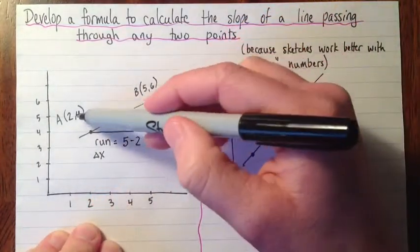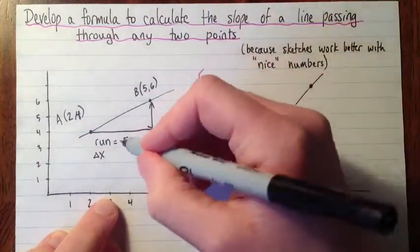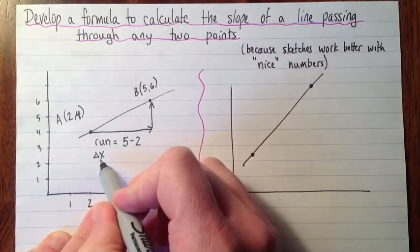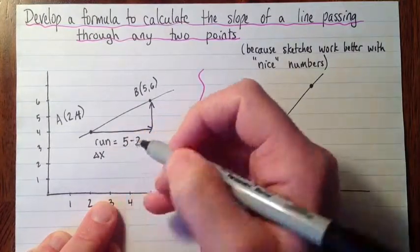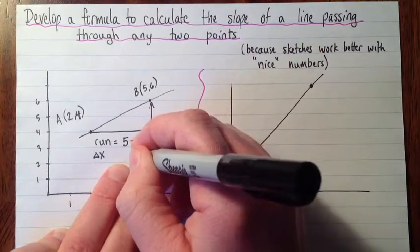Okay, because that's how much more 5 is compared to 2. It's 5 take away 2, the difference. When we talk about the difference in the X's, the change in X's, the difference again means subtraction. So that run is 5 take away 2 and that's 3.